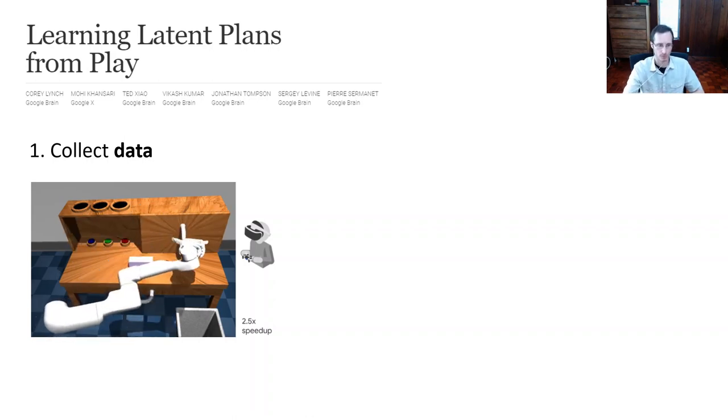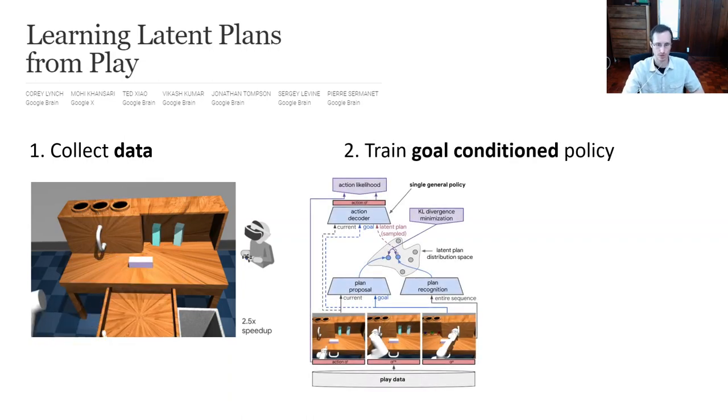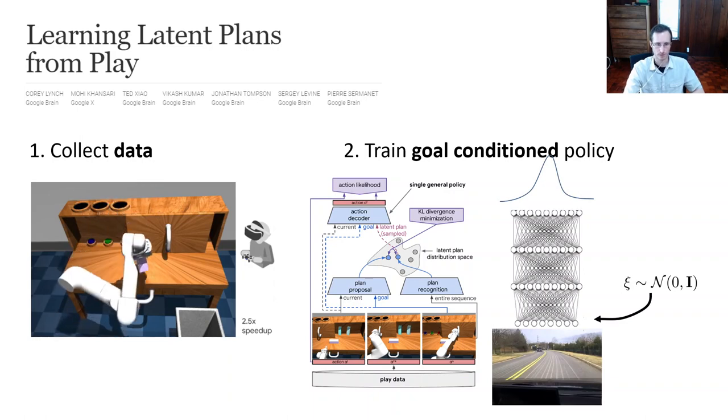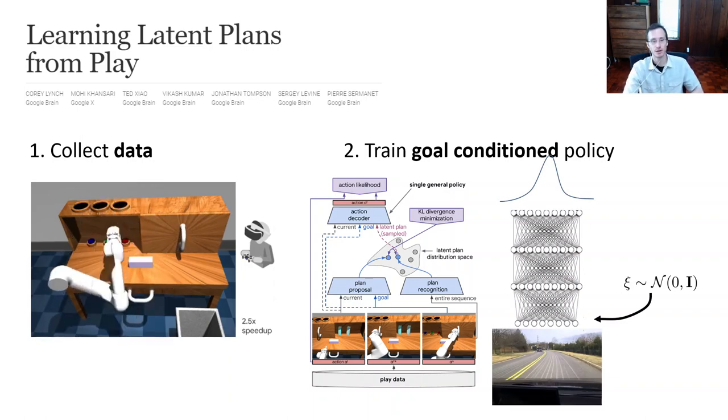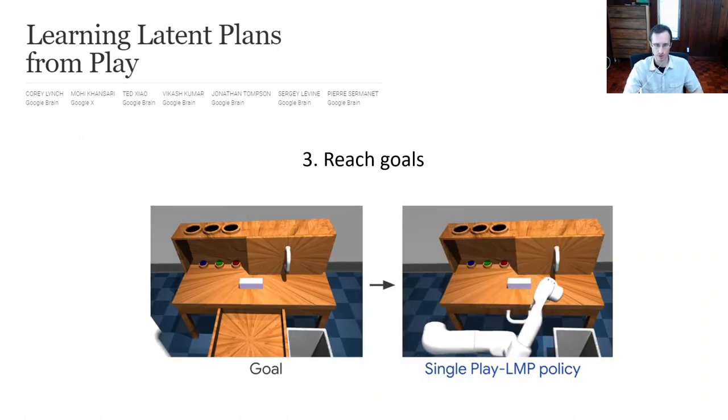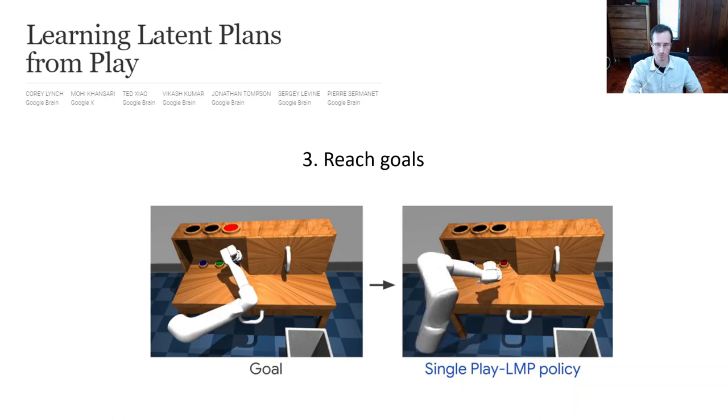So by taking this data and performing this goal relabeling, where every trajectory is labeled with the state that was actually reached later on in that trajectory, and using a latent variable policy that can express multimodality, the authors of this work were actually able to get a pretty effective policy for reaching a wide variety of goals. So this uses that latent variable model trick from before, and it uses the goal relabeling. And putting them together, you can get a policy where you can give it a goal, like a state where the door is closed or a state where the drawer is open, and the robot arm will actually autonomously go and do that. So you can see that it actually does a pretty significant variety of behaviors all in a single policy.